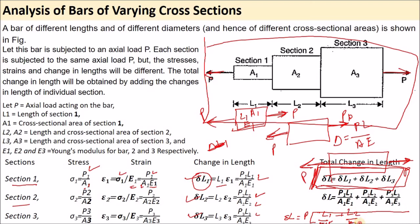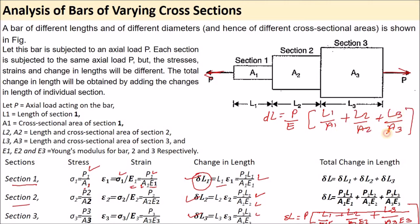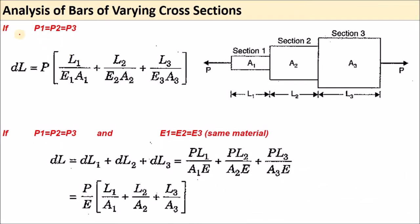So: δL = P · [L1/(A1·E1) + L2/(A2·E2) + L3/(A3·E3)]. If the material is also the same, then E1 = E2 = E3 = E, and the formula simplifies to δL = (P/E) · [L1/A1 + L2/A2 + L3/A3]. If you know the simple formula δL = PL/AE, you can always solve without needing to memorize the extended form.